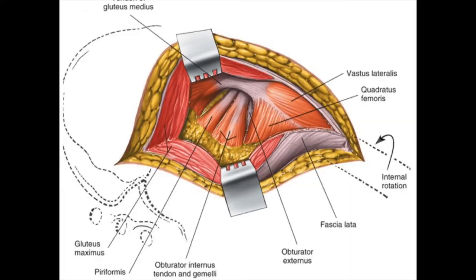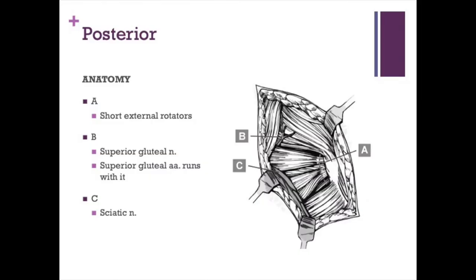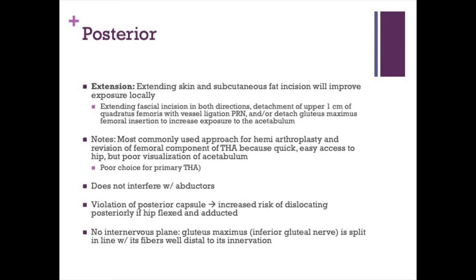You use stay sutures in the short external rotators for closure, along with a T-shaped or L-shaped capsulotomy that should be tagged — because in the posterior approach, capsule closure has been shown to lower dislocation risk. You do not want to get into the quadratus femoris because the sciatic nerve lies on the backside of it and is being protected. This is an extensile approach, extendable into the Kocher-Langenbeck approach to the posterior acetabulum, and can be extended as far down the femoral shaft as needed. There is no true inner-nervous plane — the gluteus maximus is split in line with its fibers, well distal to its innervation by the inferior gluteal nerve.